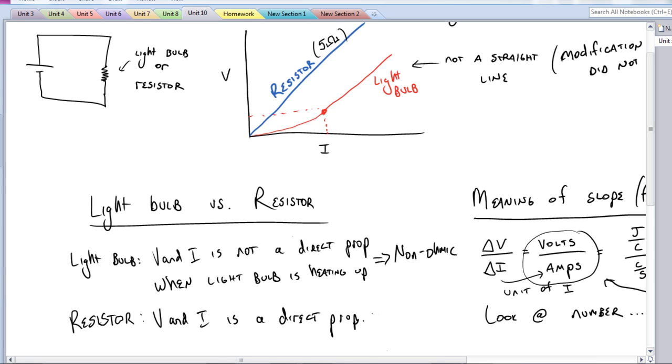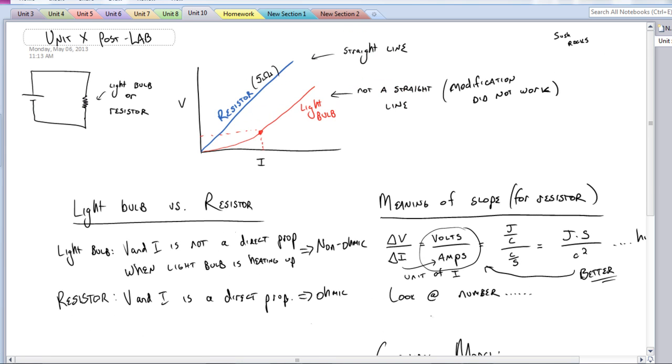And what happens is we call this, this is an ohmic. It follows the property of an ohmic resistor. And we'll continue on what that actually is in just a second. So that is the first part of this.